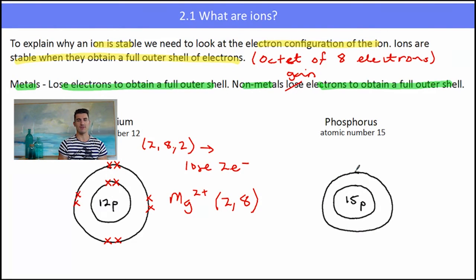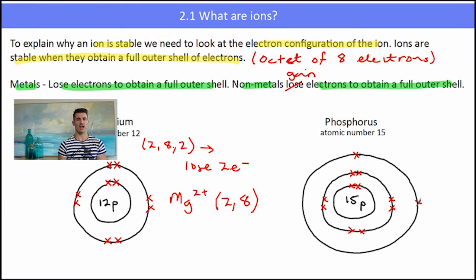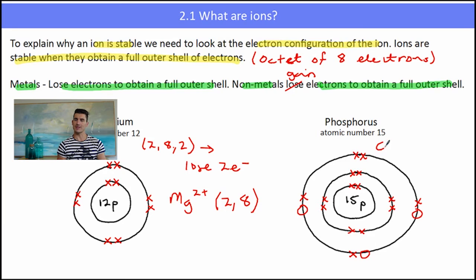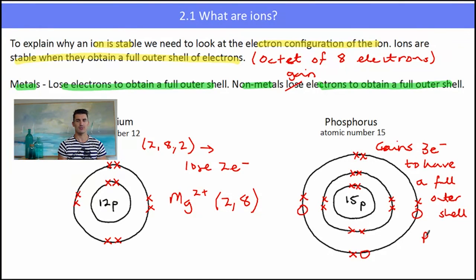Phosphorus, with 15 protons, will have 3 shells. Going through and putting in my electrons — 2 electrons in the first shell, 8 electrons in the second shell which is full, and then 5 electrons in the outer shell. Phosphorus has 3 places where an electron could go, and it will gain 3 electrons to fill its outer shell. Its outer shell will then have an octet of 8 electrons. In this state, the phosphide ion is stable and has the formula P³⁻. Its electron configuration is now 2, 8, 8.